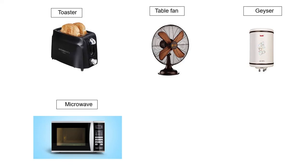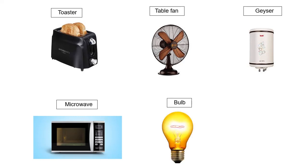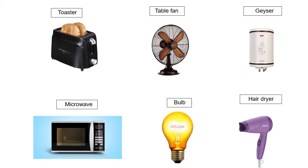This is a microwave. A microwave is a kitchen appliance. It is used to heat and bake different food items. This is a bulb. It is transparent and it emits light. This is a hair dryer. It is an electrical device which is used to dry wet hair faster.